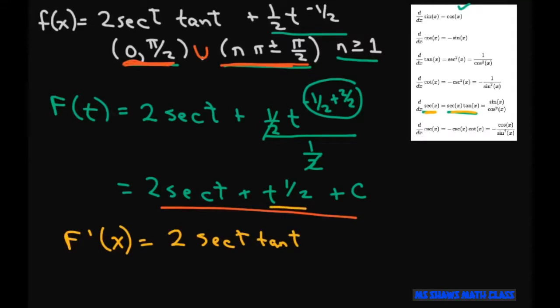And the derivative of this is just plus 1 half T to the negative 1 half. The derivative of C is 0, so we don't need that. And it comes back to our original.